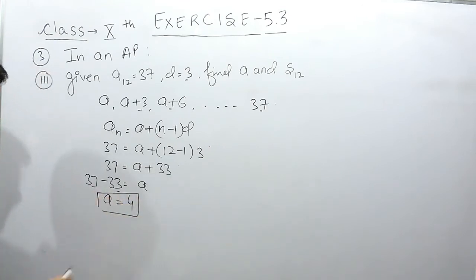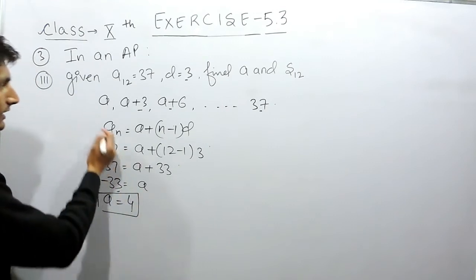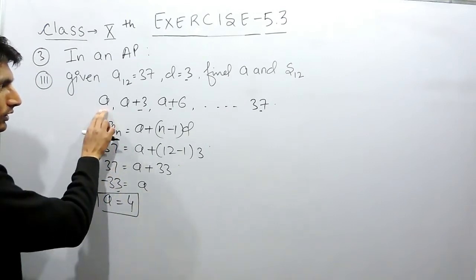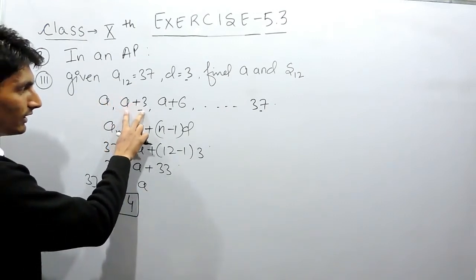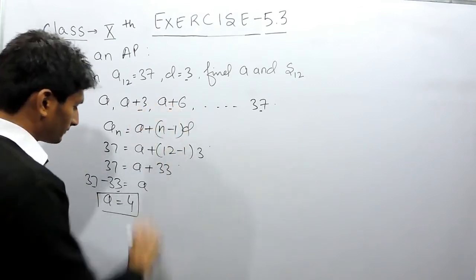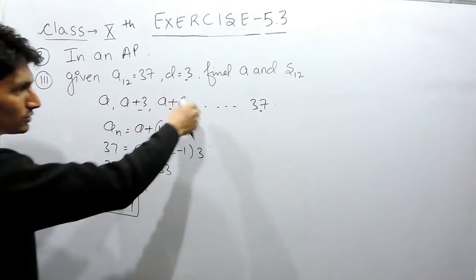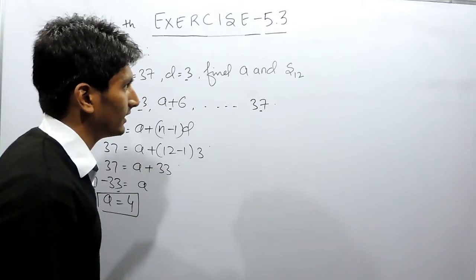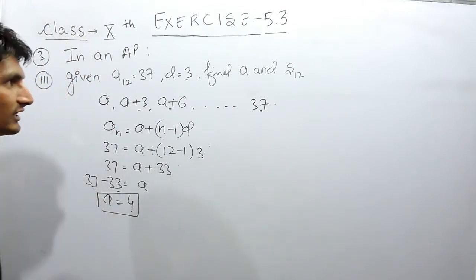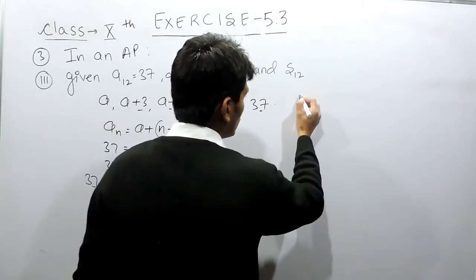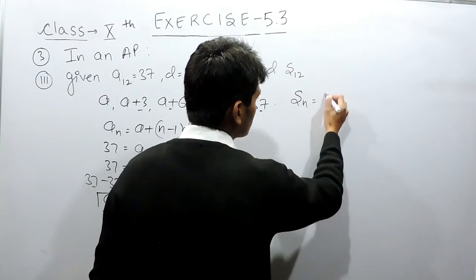37 minus 33 is equal to 4. So here the first term must be equal to 4, then it must be 7 and then it must be 10 and so on till 37. Now you have to find the sum of these 12 terms.